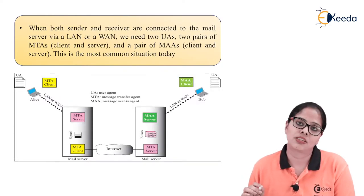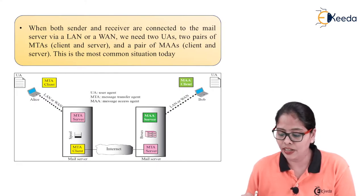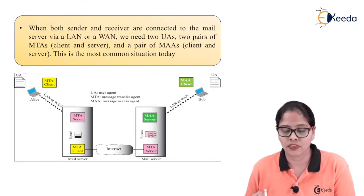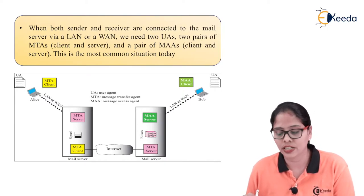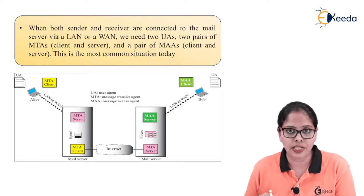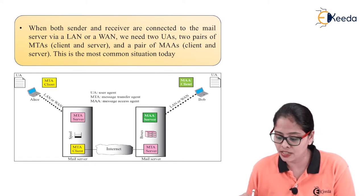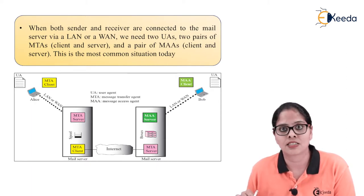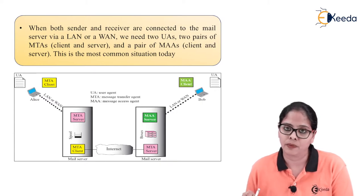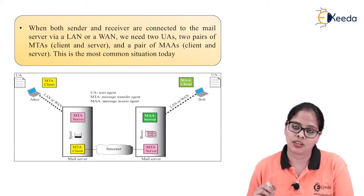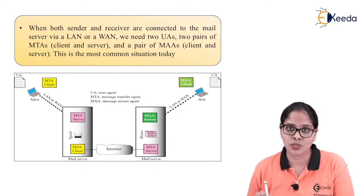The fourth scenario: when both sender and receiver are connected to the mail server via LAN or WAN, we need two user agents, two pairs of MTA, and a pair of MAA — message access agent. This is the most common situation today. For example, when you access Gmail, it is not necessary that your device is directly connected to the Gmail server — you may access Gmail from your computer or handset.